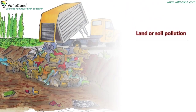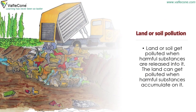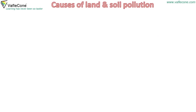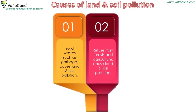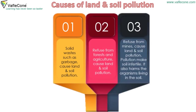Land or soil pollution: land or soil gets polluted when harmful substances are released into it, or when harmful substances accumulate on it. Causes of land and soil pollution: solid wastes such as garbage, refuse from forests and agriculture, and refuse from mines all cause land and soil pollution. Pollution makes soil infertile and also harms the organisms living in the soil.